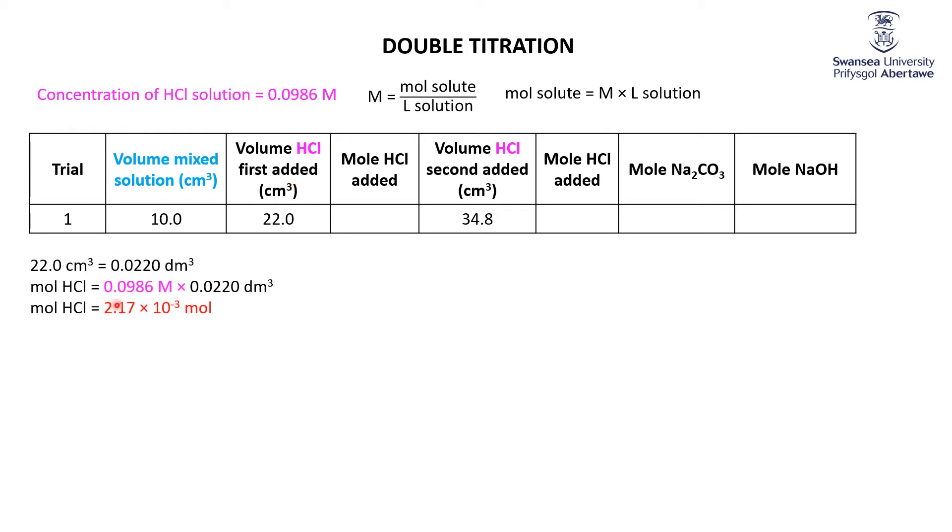So here's that calculation here. The first moles, 2.17 times 10 to the minus 3. I got that by taking the concentration times the volume in cubic decimetres. Let's do the same calculation for this 34.8, and that's a total of 3.43 times 10 to the minus 3 moles of HCl.